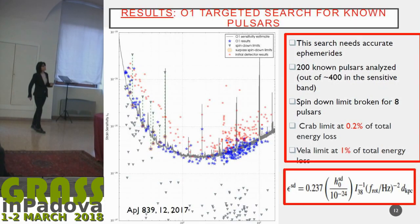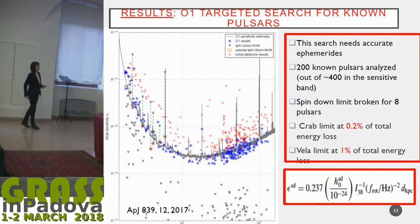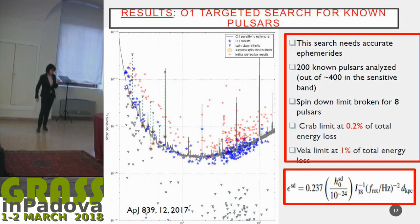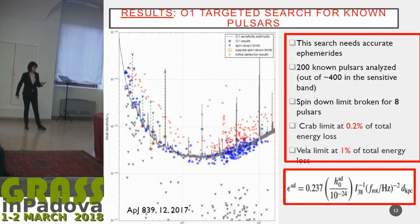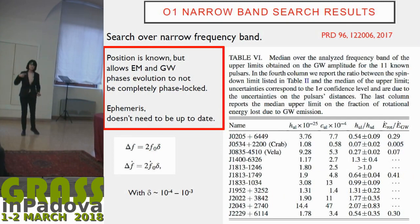A short review of results: for known pulsars — those for which colleagues gave us accurate ephemerides, such as Crab, Vela, and a few others — we were able to go down and put a limit which is lower than the famous spin-down limit. This is important because, while it's not a detection, it constrains the characteristics of the source and can be stated in terms of upper limits on the ellipticity. We have also done another search allowing some mismatch between the rotation frequency and the gravitational wave frequency, and we also have results for non-pulsars.